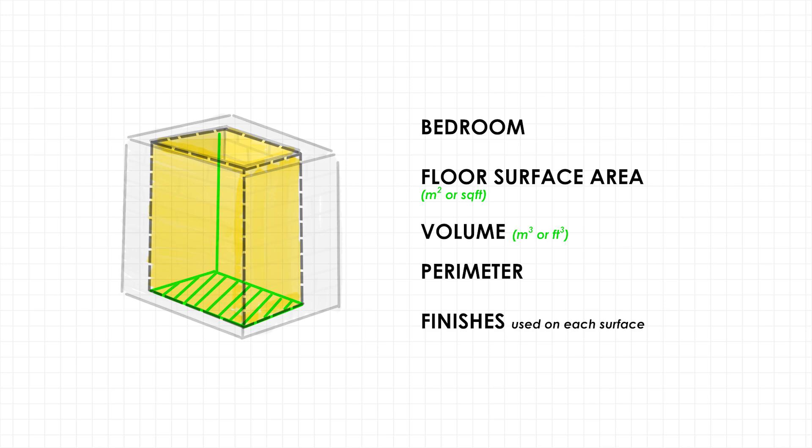We would also be able to pull the types of finishes being used within that room — whether it be ceramic tiles on the floor, red paint on the walls, wooden ceilings, whatever is in that room. The space tool allows us to capture all that information and push it into a schedule. As you can see, the space tool becomes very important and very helpful and will save you a lot of time, especially if you're working on a very large project.